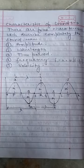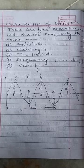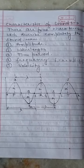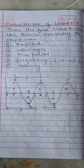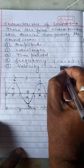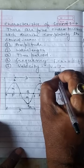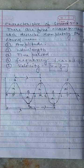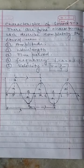Wave velocity: the distance travelled by a wave in one second is called wave velocity. It is denoted by V and its SI unit is meter per second. Wave velocity equals wavelength divided by time period: V = λ/T.